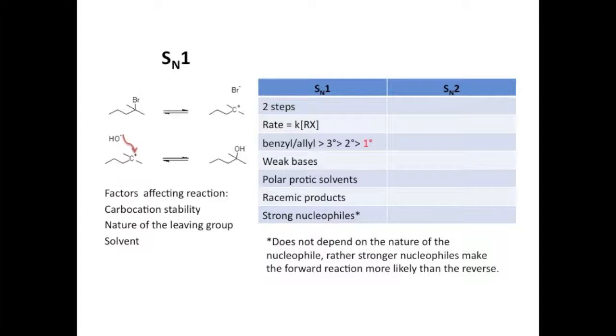The SN1 reaction also prefers strong nucleophiles. Now I want to be clear. The rate does not depend on the nature or the concentration of the nucleophile, but rather a stronger nucleophile will favor the forward reaction over the reverse. You can see the two-way arrows in the mechanism. Well, if the substitute is a weaker nucleophile than the original leaving group, then the reverse reaction is favored. If it's stronger, then the forward reaction is.